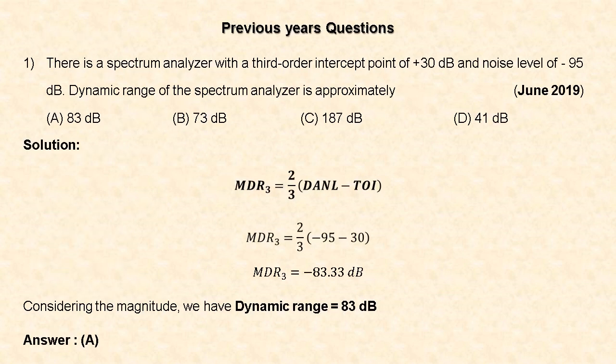Now let us see previous year questions. First question (June 2019): A spectrum analyzer has a third-order intercept point of +30 dBm and a noise level of −95 dBm. The dynamic range is approximately? Using the formula: Maximum dynamic range = (2/3)(DANL − TOI) = (2/3)(−95 − 30) = (2/3)(−125) = −83.33 dB. Considering only the magnitude, the dynamic range is 83 dB. Option A is the correct answer.